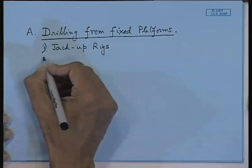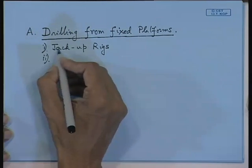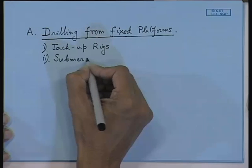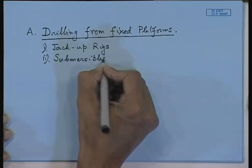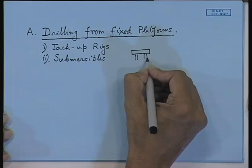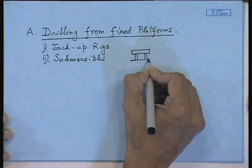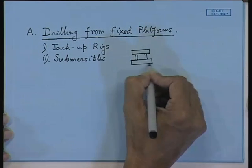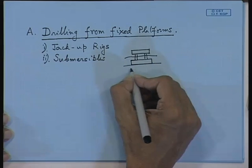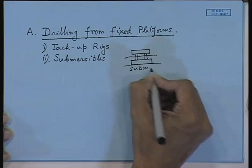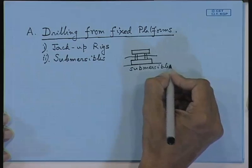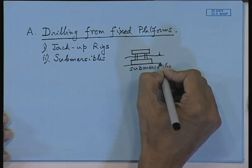Then you have submersibles. Submersibles are not much in use nowadays. Submersibles basically have two hulls, one above the water level and the other on the sea bed. These are the precursors of our semi-subs. The bottom hull actually rests on the sea bed. Submersibles were used in the 1940s in shallow water, around 12 meters water depth.